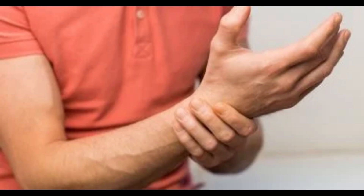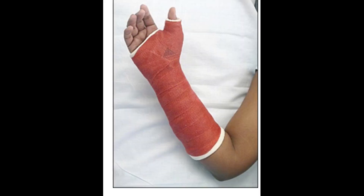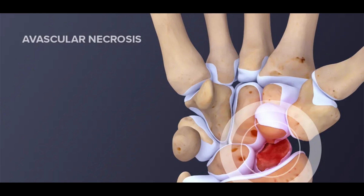What is the problem with the scaphoid bone? First, the fracture may not appear in the first two weeks on normal x-rays, so a plaster splint is applied and imaging is repeated after two weeks; a CT scan or MRI may also be performed. Second, the blood supply to the scaphoid bone is poor, so the rates of non-healing of the fracture are high and bone atrophy may occur.